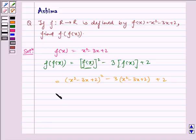Which is equal to, solving this we get x⁴ + 9x² + 4 - 6x³ - 12x + 4x² - 3x² plus 9x - 6 + 2.